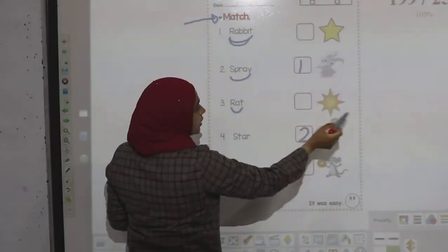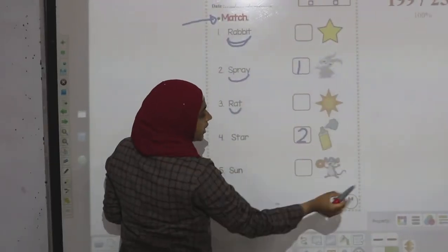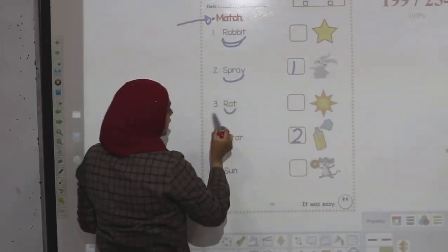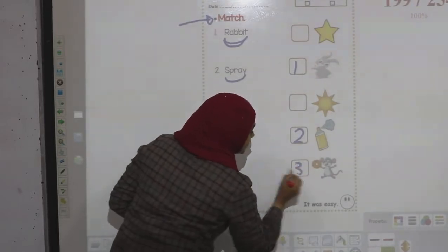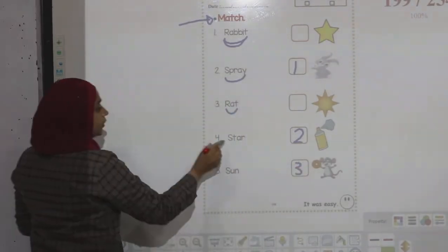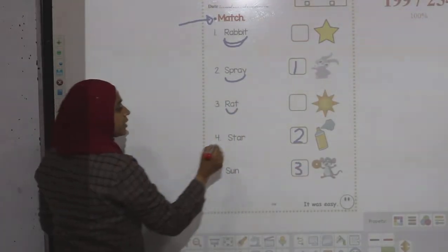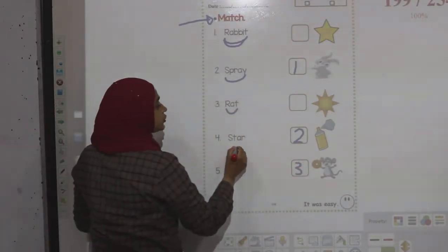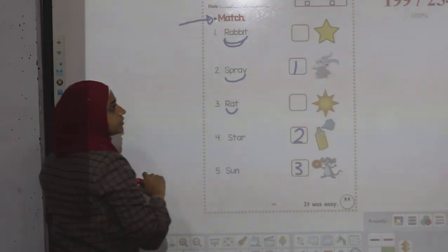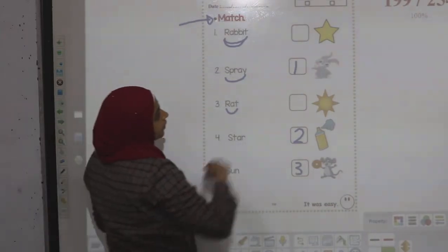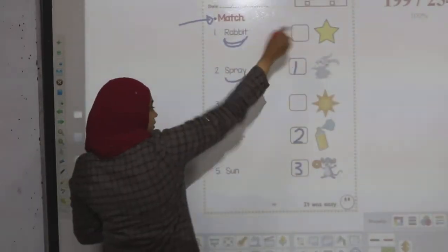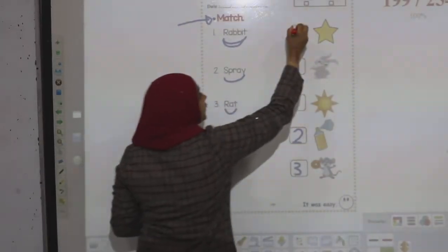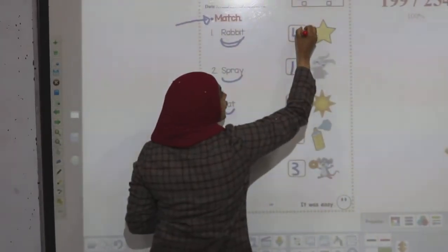Number three — rat. This is star, sun, rat — I write number three. Number four — star. The first one here is star — I write number four.